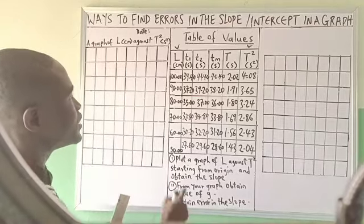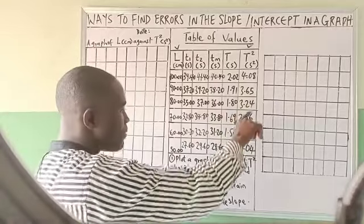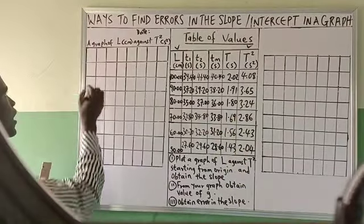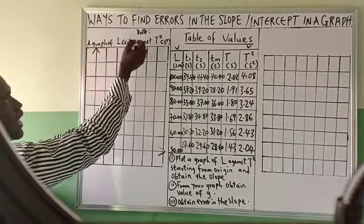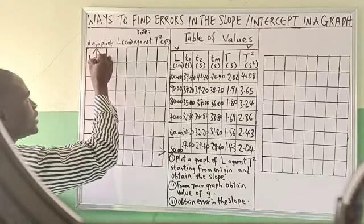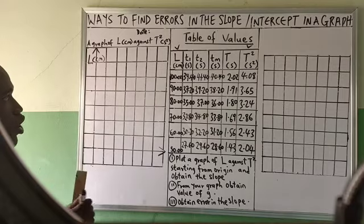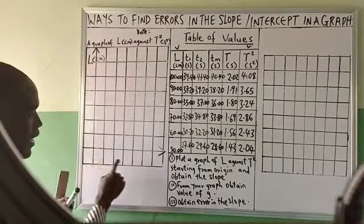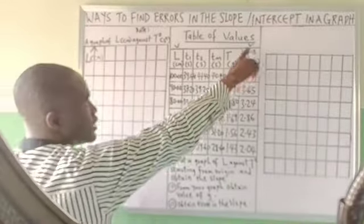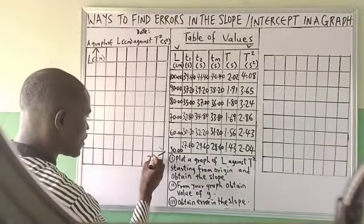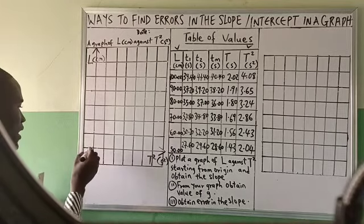What you will do is, since the lowest number is not close to zero, you level your Cartesian axis. Label it L in cm — because what you are plotting is L in cm. Don't write Y against X. Label it appropriately. This is L in cm, and this is T squared in seconds squared. Don't say Y against X — you have passed that level.